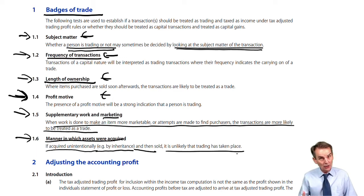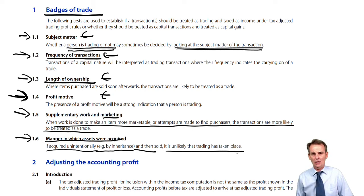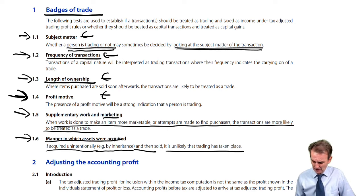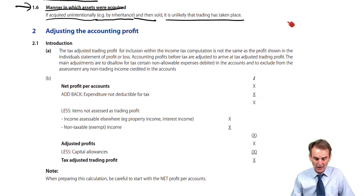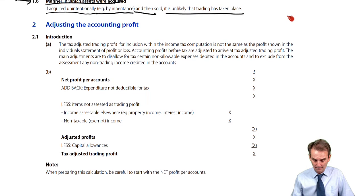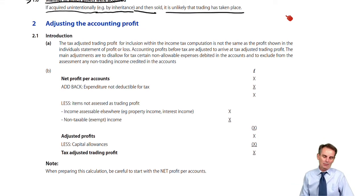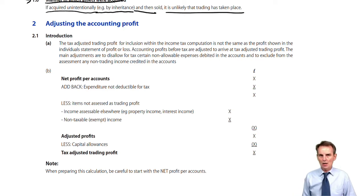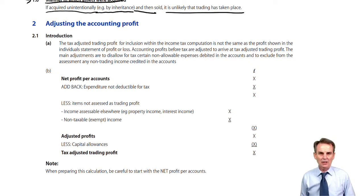We take an overall view. You need to be aware of what those badges of trade are and able to quote and potentially apply them. Be aware of them in case we get an objective testing question on which of these are or are not badges of trade. But by far the most important part of this chapter — something that will be tested in every exam — is the adjusting of the accounting profit.